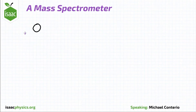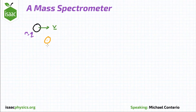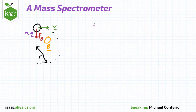A particle of mass m and charge q enters the region of a magnetic field with a velocity v. The magnetic field acts perpendicular to this velocity. As described in the question, it then moves in a semicircle of radius r. In order to do this, there must be a centripetal force, which is provided by the magnetic force Fb.